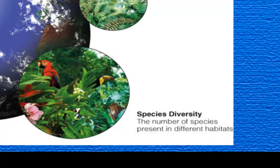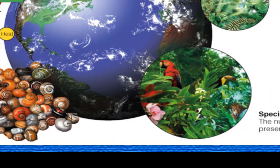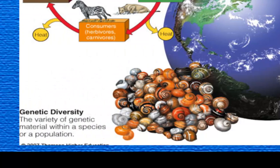But even amongst that species there's going to be genetic diversity, or the variety of genetic material that's going to be found within that population. It is that genetic material which allows for resilience in that population, as genetic changes may allow for that population to change and survive in an ever-changing world.